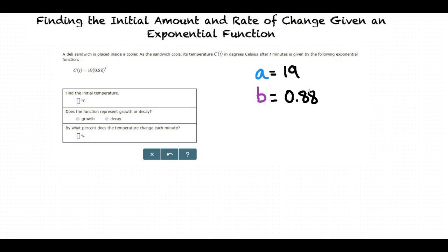Because a equals 19, the initial temperature is 19 degrees Celsius. And since b equals 0.88, which is less than 1, the function represents decay.